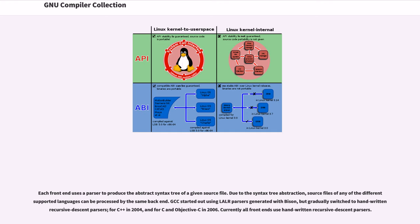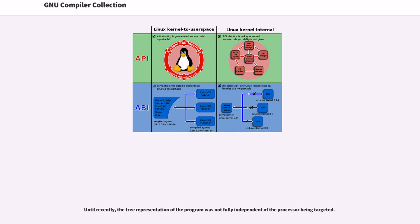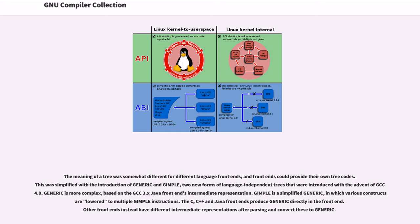Each front-end uses a parser to produce the abstract syntax tree of a given source file. Due to the syntax tree abstraction, source files of any of the different supported languages can be processed by the same back-end. GCC started out using LALR parsers generated with Bison, but gradually switched to handwritten recursive descent parsers, for C++ in 2004, and for C and Objective-C in 2006. Currently all front-ends use handwritten recursive descent parsers.